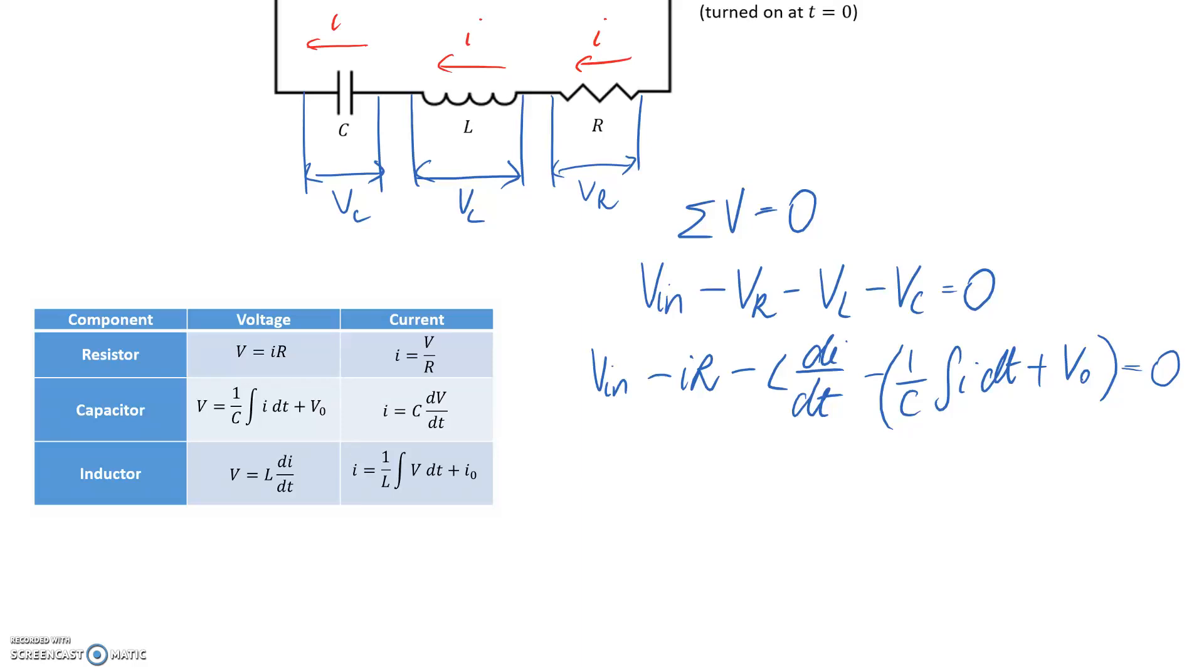So just before we do that, what I might do is just expand out this bracket. So it's going to be minus 1/C times that integral, and then minus V_0 equals zero.